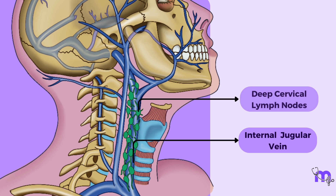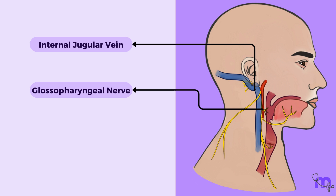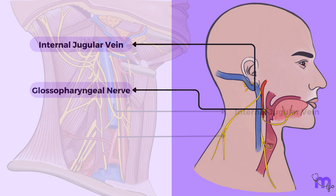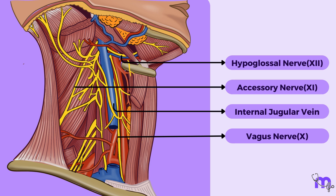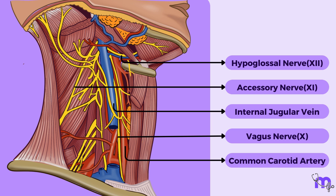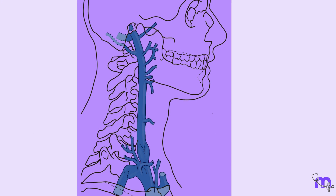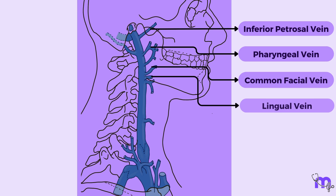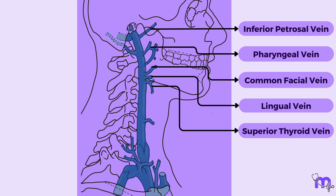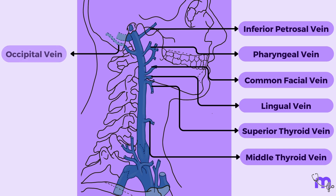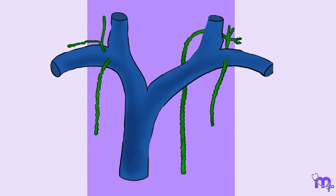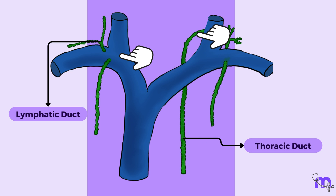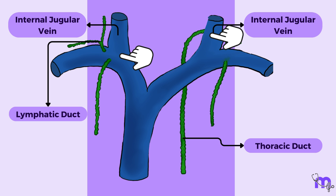Throughout its course, the deep cervical lymph nodes are found close to the internal jugular vein. Its medial relations involve proximity to the internal carotid artery and the 9th, 10th, 11th and 12th cranial nerves in the upper part, as well as the common carotid artery and vagus nerve in the lower part. The tributaries include the inferior petrosal vein, pharyngeal veins, common facial vein, lingual vein, superior thyroid vein, middle thyroid vein, and occasionally the occipital vein. Additionally, the right lymphatic duct and thoracic duct usually open into the internal jugular vein or its junction with the subclavian vein.